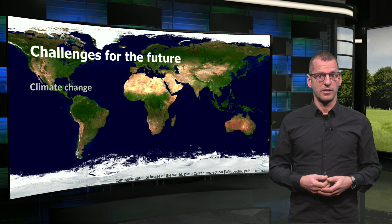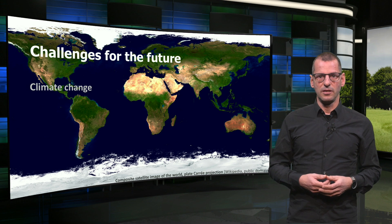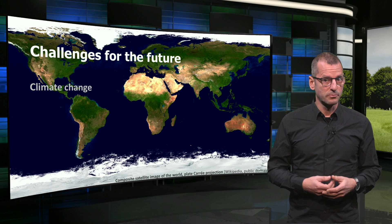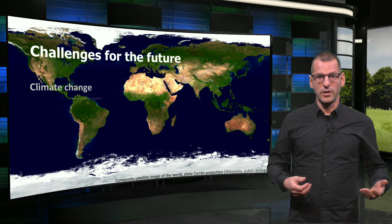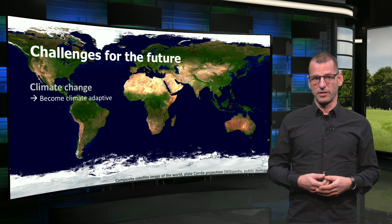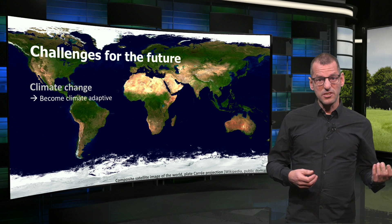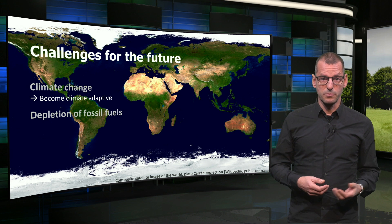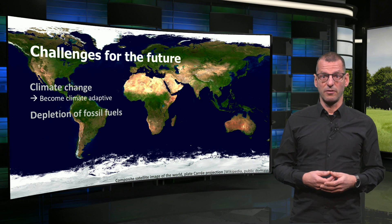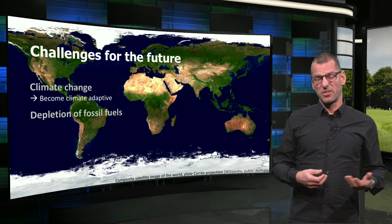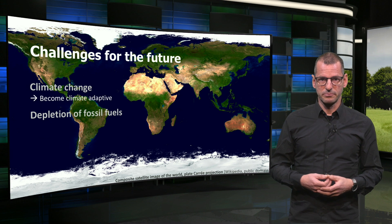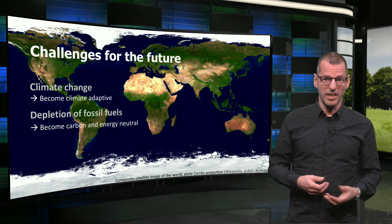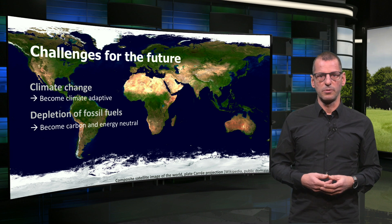The first is climate change. It is happening already and we cannot stop what our parents and grandparents have caused, so we have to be prepared for extreme weather events. Depletion of fossil fuels is a challenge. Perhaps we can postpone the end of the fossil era another human life, but there will be an end to it anyway. And if we want to avoid extreme climate events, we have to switch to clean renewables completely.